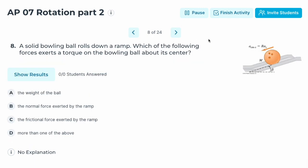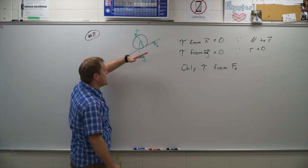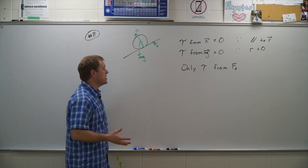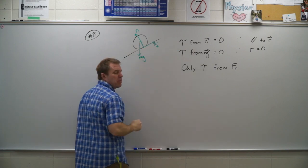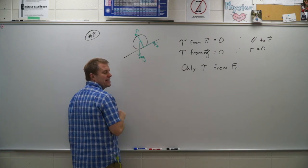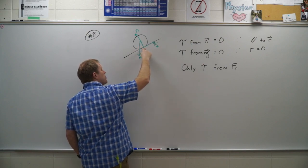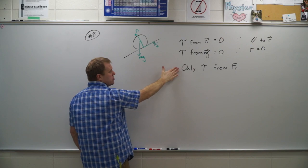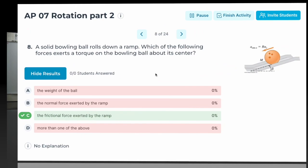Number eight: a solid bowling ball rolls down a ramp. Which of the following forces exerts a torque on the bowling ball about its center? The normal force is parallel to the radius — not perpendicular — so no torque. Mg acts through the center so its distance from the axis is zero, producing no torque. The force of friction acts at a distance and is perpendicular, so friction is the only force producing torque. Correct answer: C.